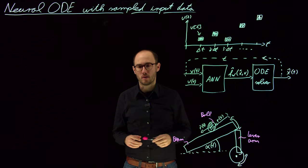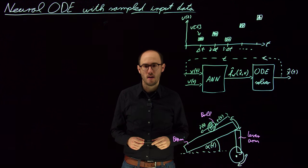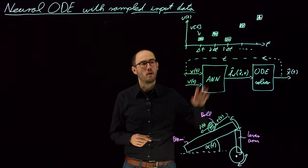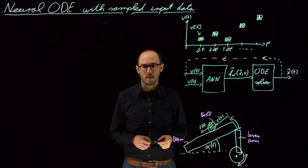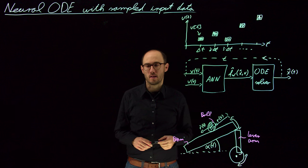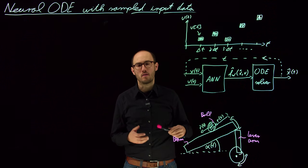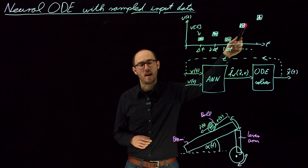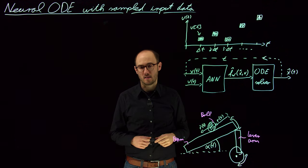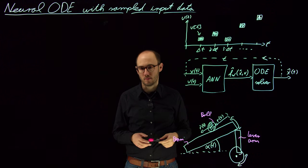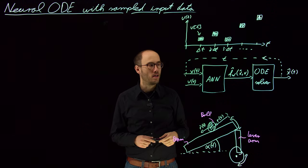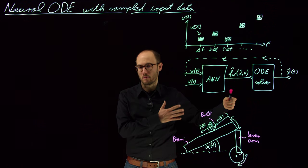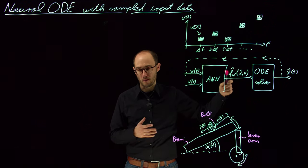Hello everyone. In this video, I would like to talk about neural ordinary differential equations and specifically what we need to consider when we want to learn a NODE model of a physical system when the input data is sampled at distinct time steps. This is a typical problem in data-driven engineering for real-world systems where, due to sensors and computational processing of sensor data, we normally only have data inputs at distinct sampling time steps. In the NODE context, what we actually do is represent our model — our data-driven modeling approach — via a continuous function, the right-hand side.